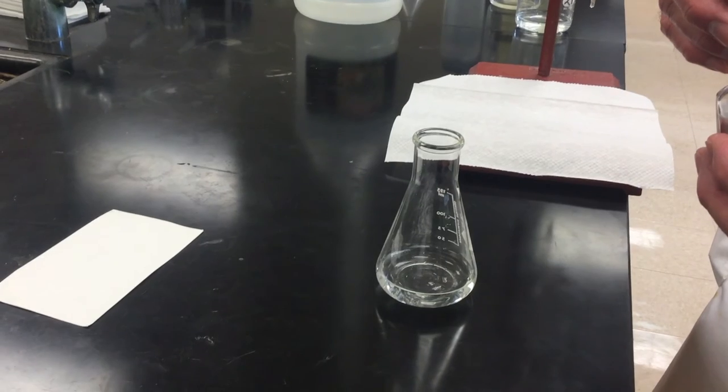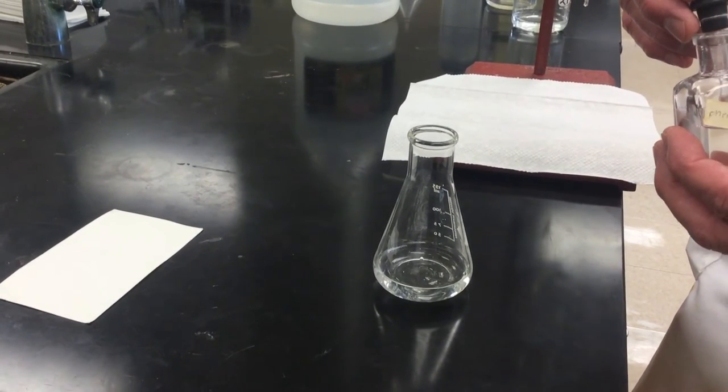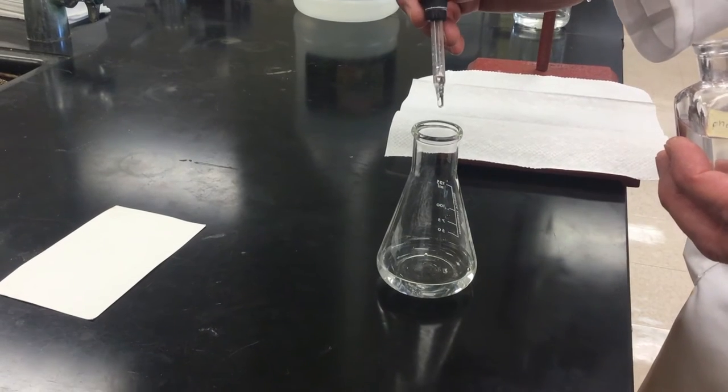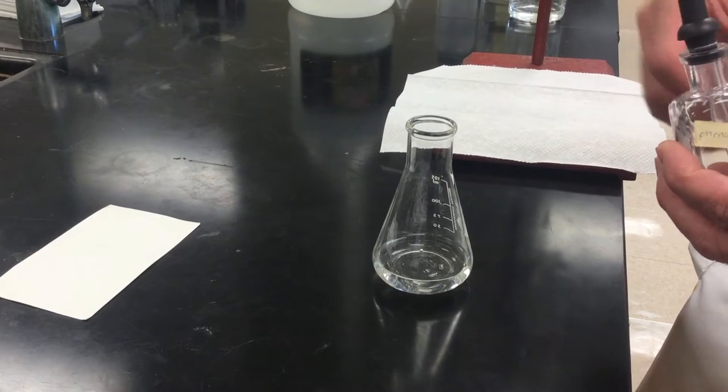In this experiment, you always want to make sure that you add phenolphthalein to your acid mixture. Phenolphthalein is a color indicator that will let you know when the reaction is complete. Always remember to add one or two drops.